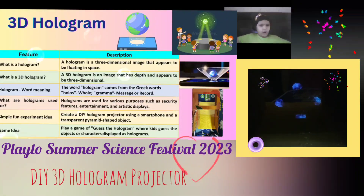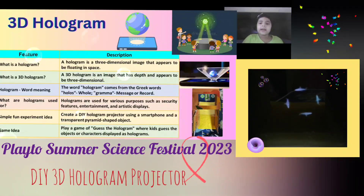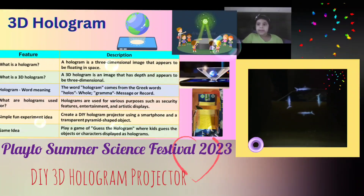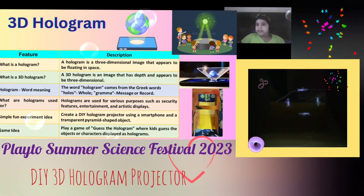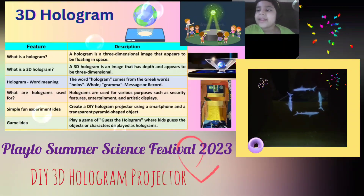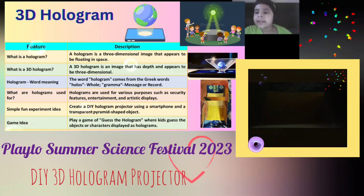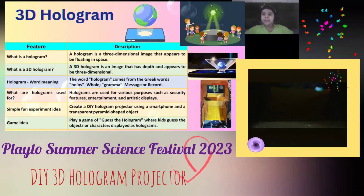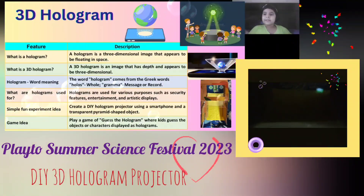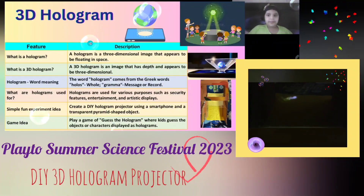What is a hologram? A hologram is a three-dimensional image that appears to be floating in space. Like this teacher who is teaching about nuclear atoms — there is a projector and they are making an image about how a nuclear atom looks.